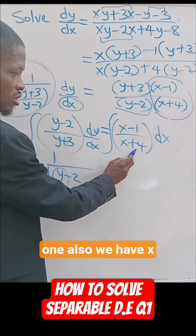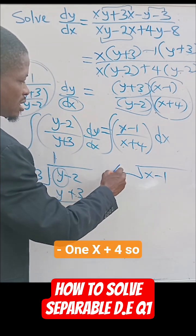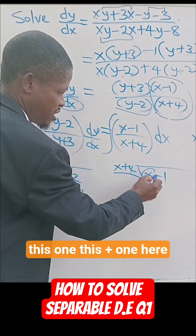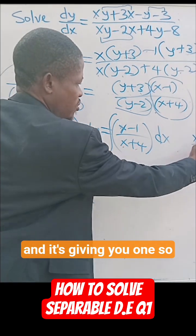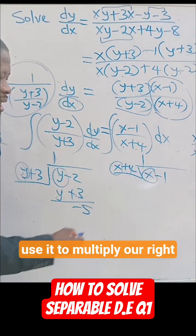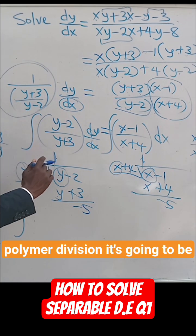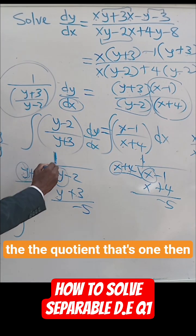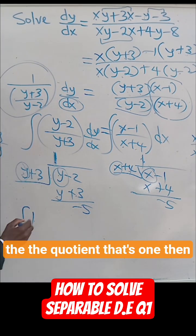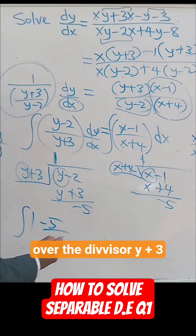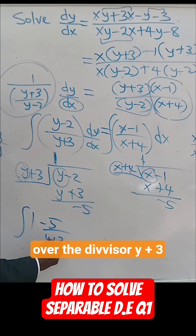The same thing you're going to do for this one also. We have x minus 1 over x plus 4. So do the same thing. This first one here over this first one here, and it's giving you 1. So use it to multiply. When you do your polynomial division, it's going to be the quotient, that's 1, then plus what you have here, minus 5 over the divisor.